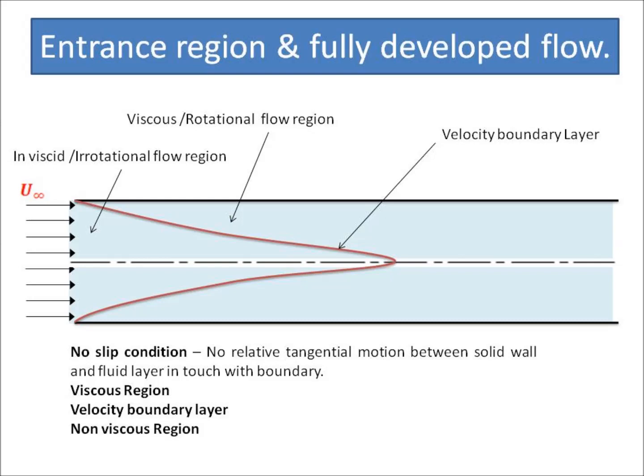The viscous region propagates towards the center as the flow progresses — the viscous region thickness keeps increasing in the direction of flow. There exists a velocity boundary layer, which is the layer separating the viscous and non-viscous flow regions. It exists at a point from the boundary where the velocity of flow is 0.99 times u-infinity. The locus of all these points from the entrance until the velocity boundary layer vanishes constitutes the velocity boundary layer. The non-viscous flow region is the region where velocity is constant at every point.